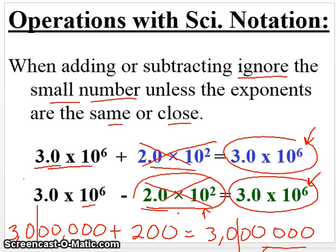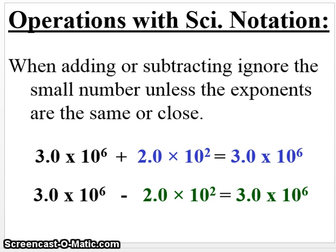Now, here it says, if they are the same or close, then you have to consider it. And we'll maybe do an example of this. And the way to do it, if they're the same or close, I would write the numbers out in regular notation, and then add them, and then write them back in scientific notation. That would be probably the way to do it.